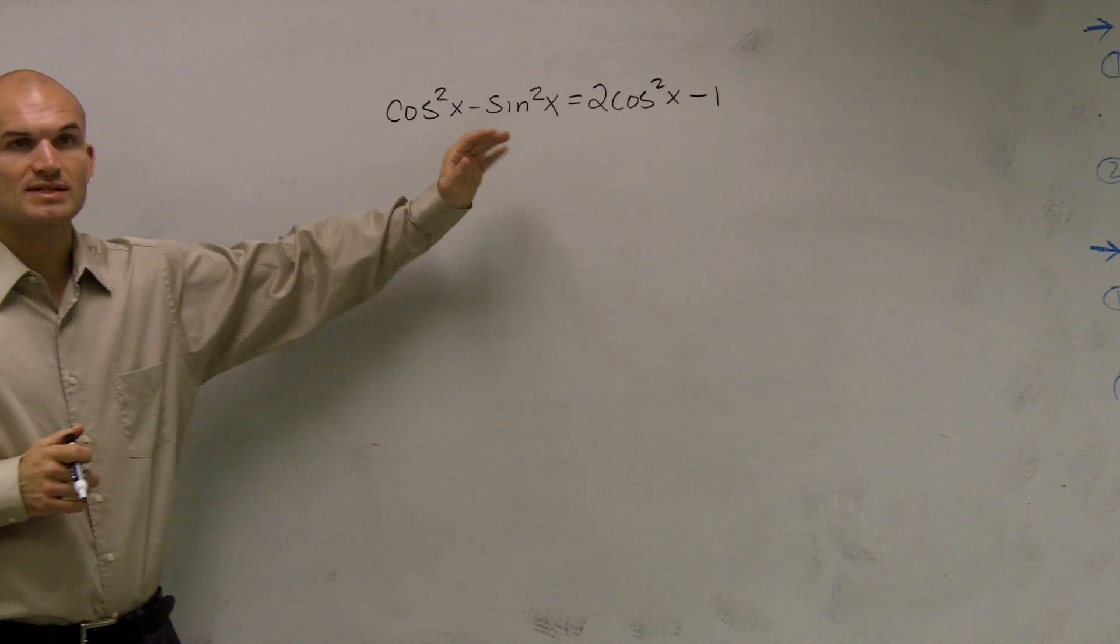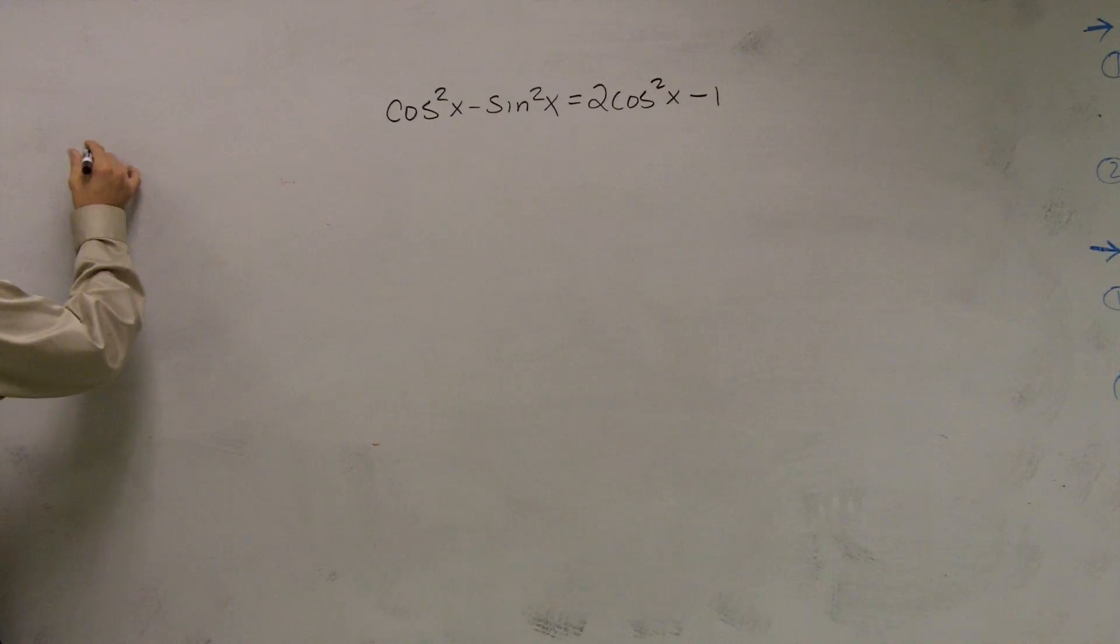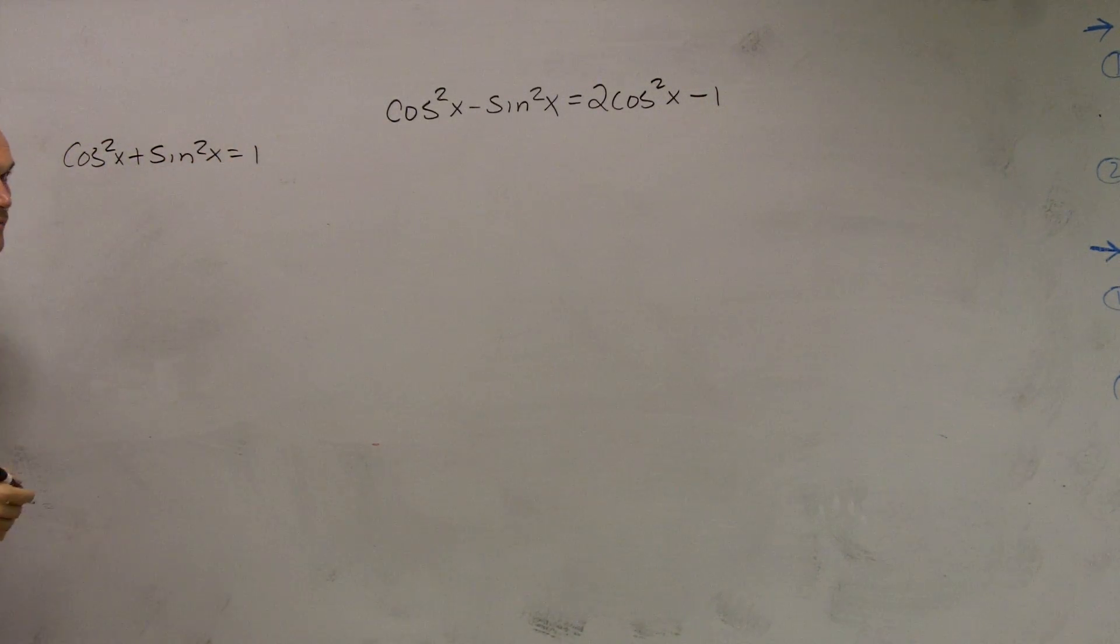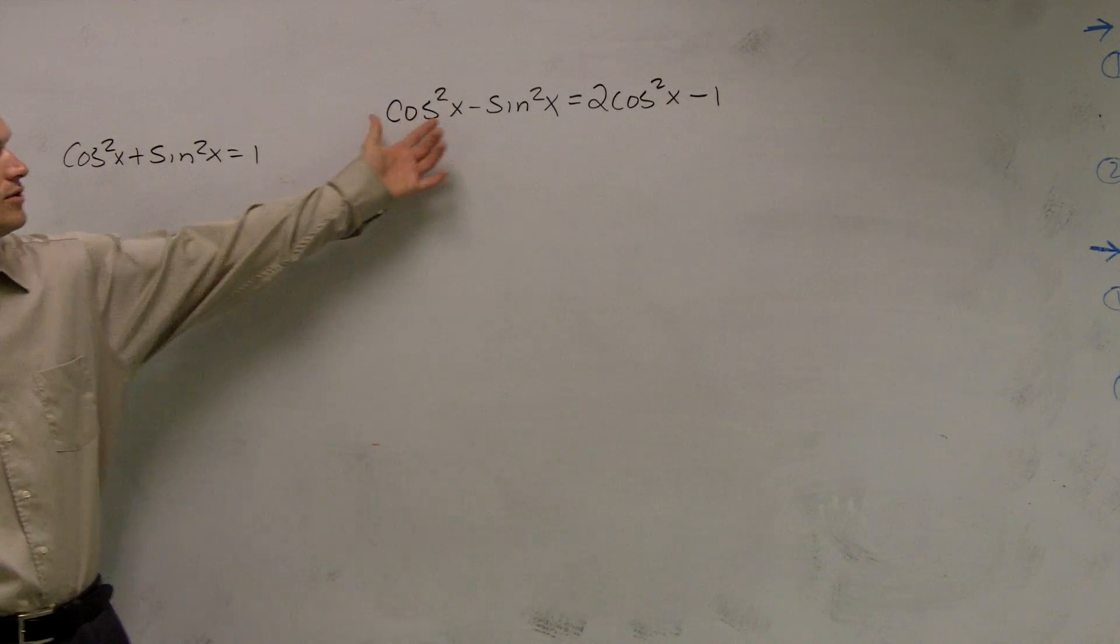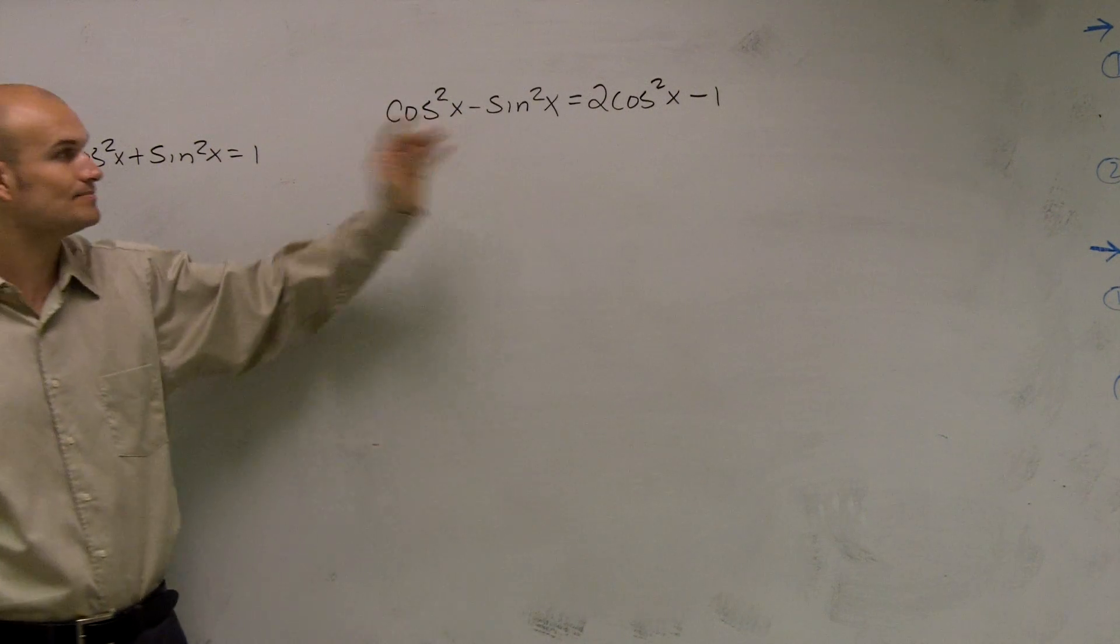Automatically, we look at this and we always want to say that's part of a trig identity, right? Because we should know that cosine squared of x plus sine squared of x equals 1. Well unfortunately, cosine squared of x minus sine squared of x doesn't really equal negative 1 or 0 or anything like that.